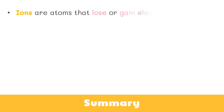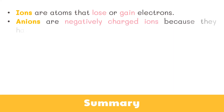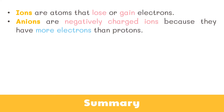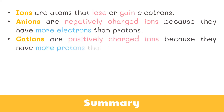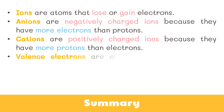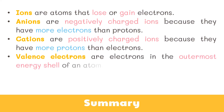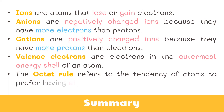Now let's wrap things up. Ions are atoms that lose or gain electrons. Anions are negatively charged ions because they have more electrons than protons. Cations are positively charged ions because they have more protons than electrons. Valence electrons are electrons in the outermost energy shell of an atom — these electrons are directly involved in any chemical activity. The octet rule refers to the tendency of atoms to prefer having 8 electrons in the valence shell.